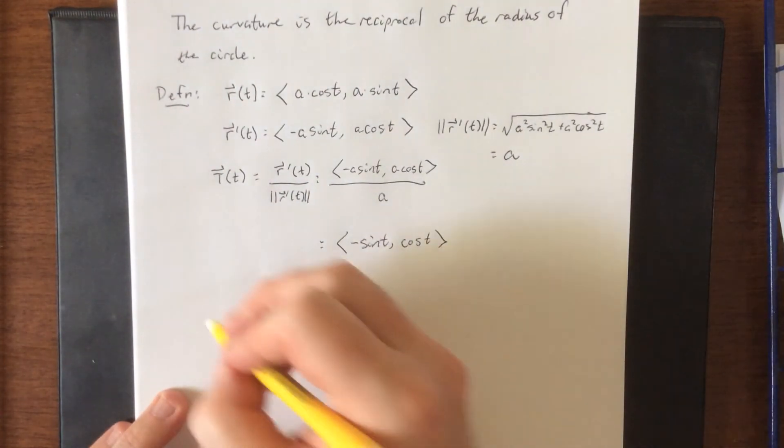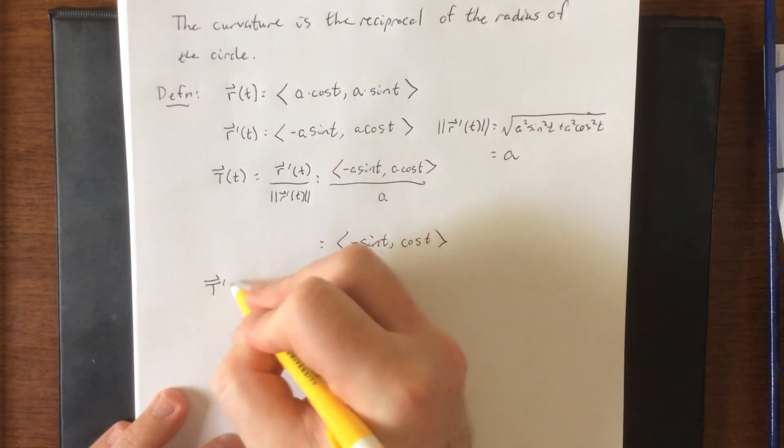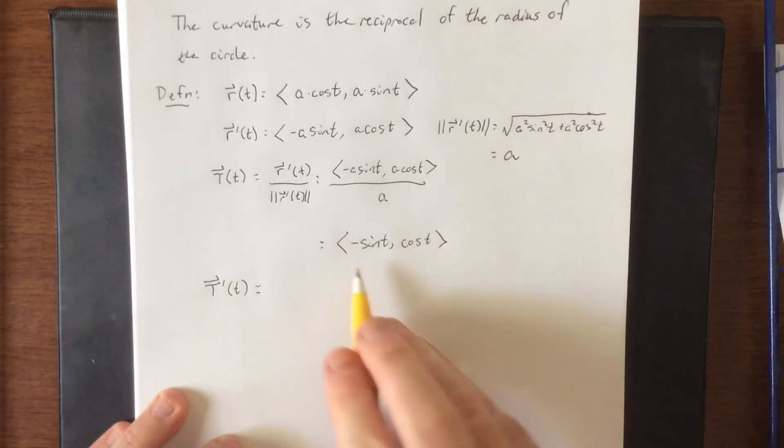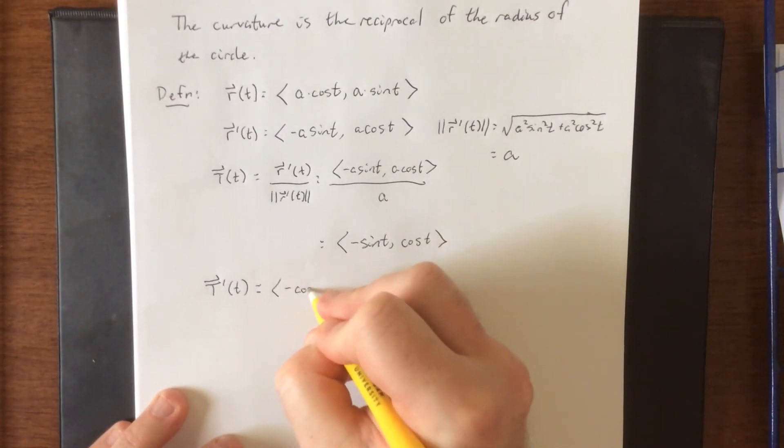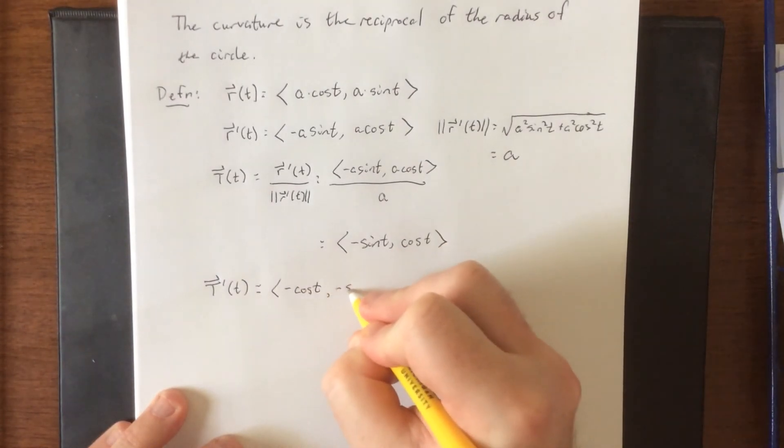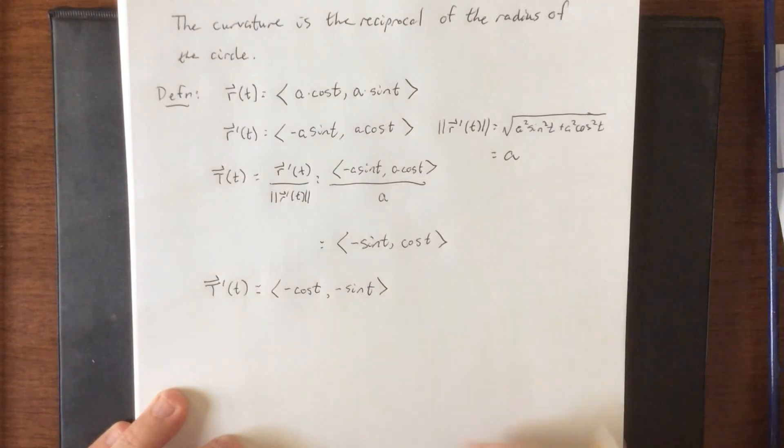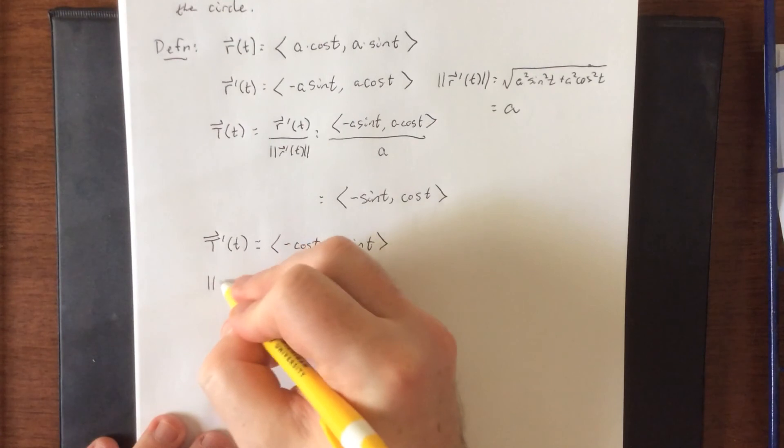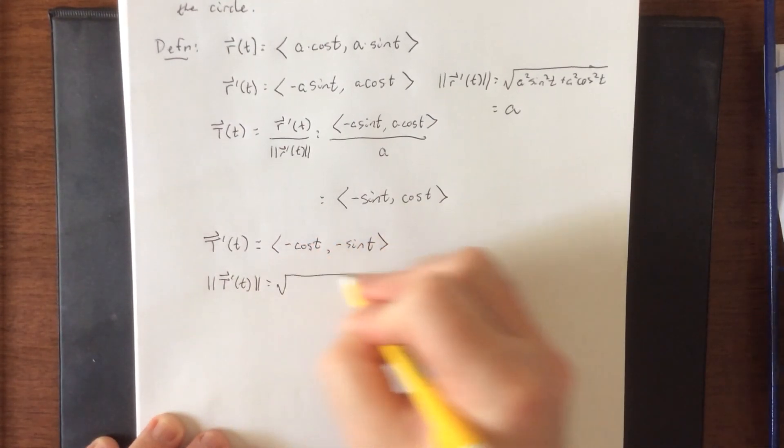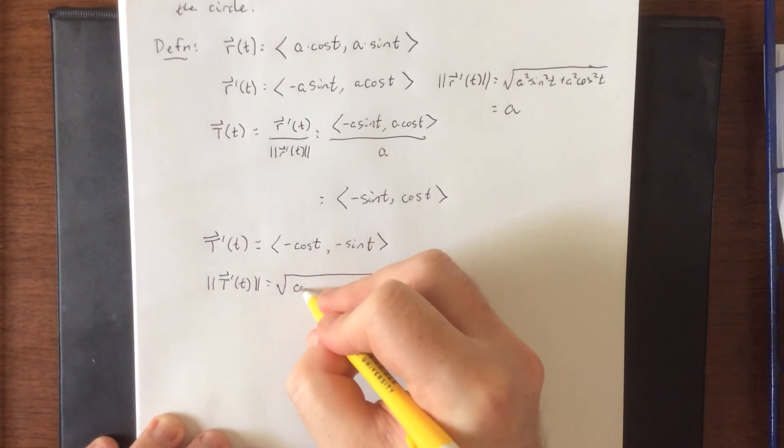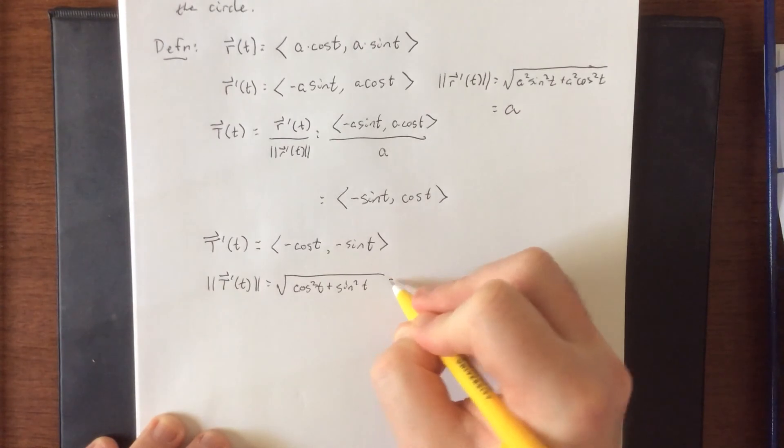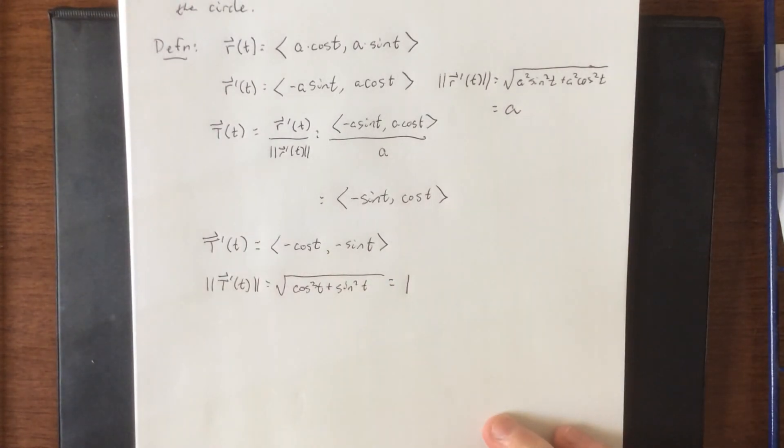Now we're going to differentiate that again for the formula. The curvature formula says we're going to take the magnitude of T prime of t. Differentiating once more, that'll be negative cosine of t, comma, negative sine of t. According to the curvature formula, we need the magnitude of this vector. Squaring each of these components, we'll get cosine squared t plus sine squared t, which is once again a Pythagorean identity, and that'll be equal to 1.